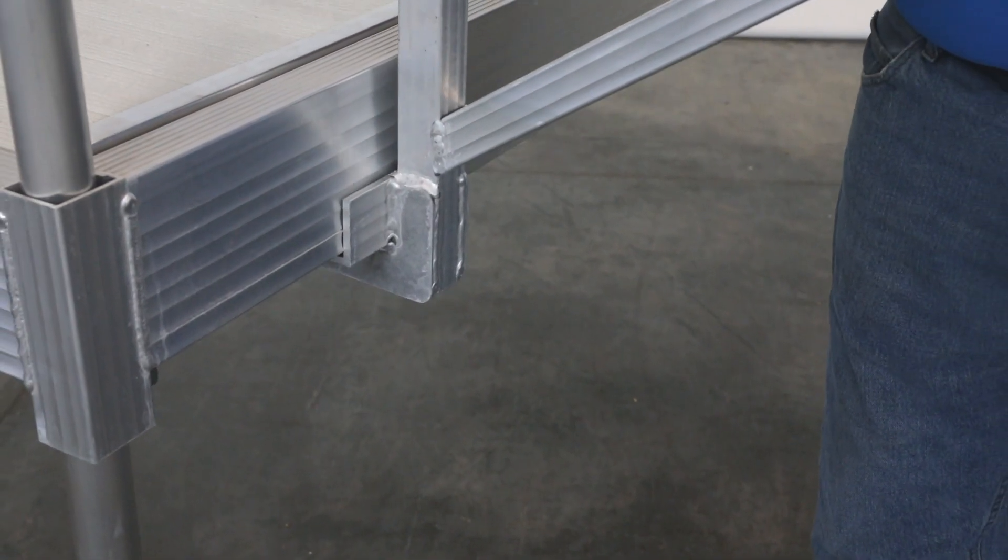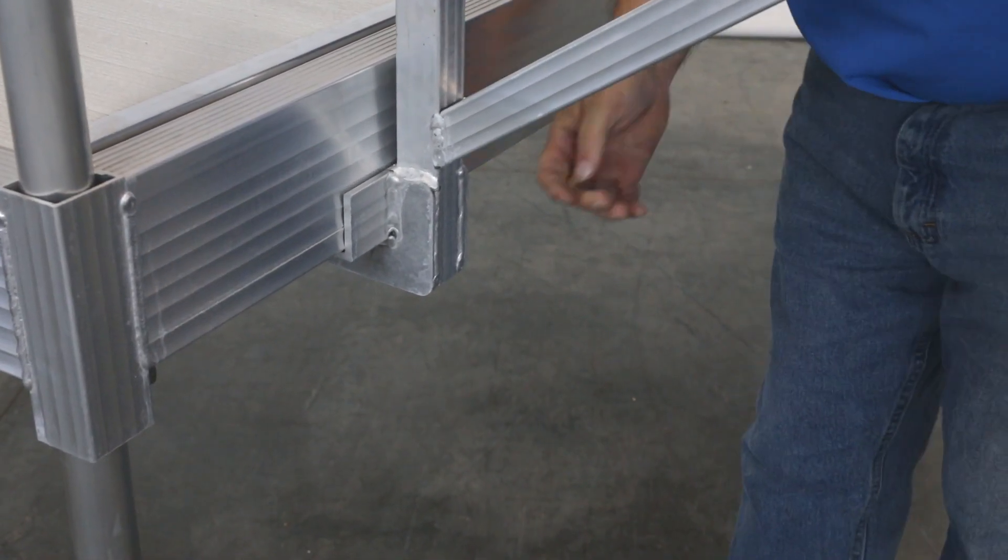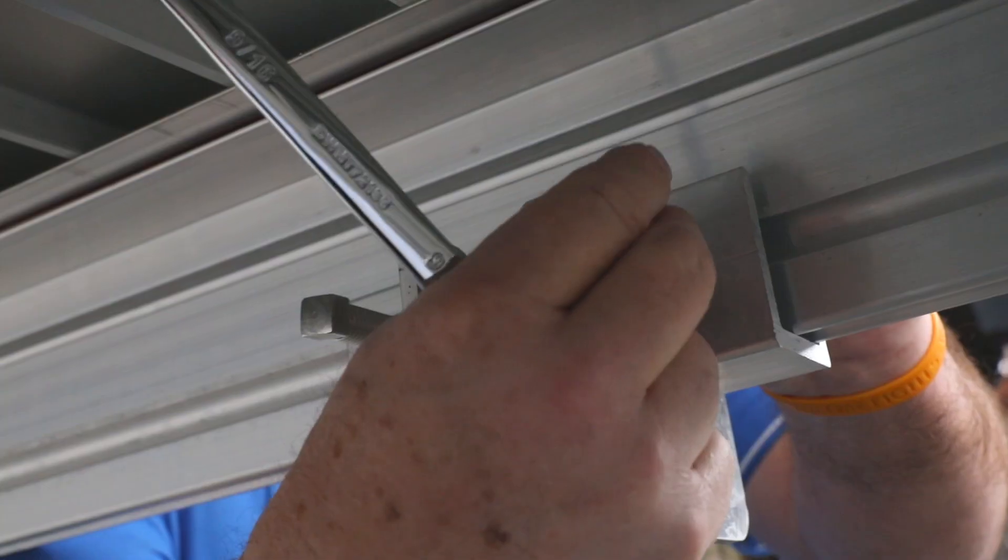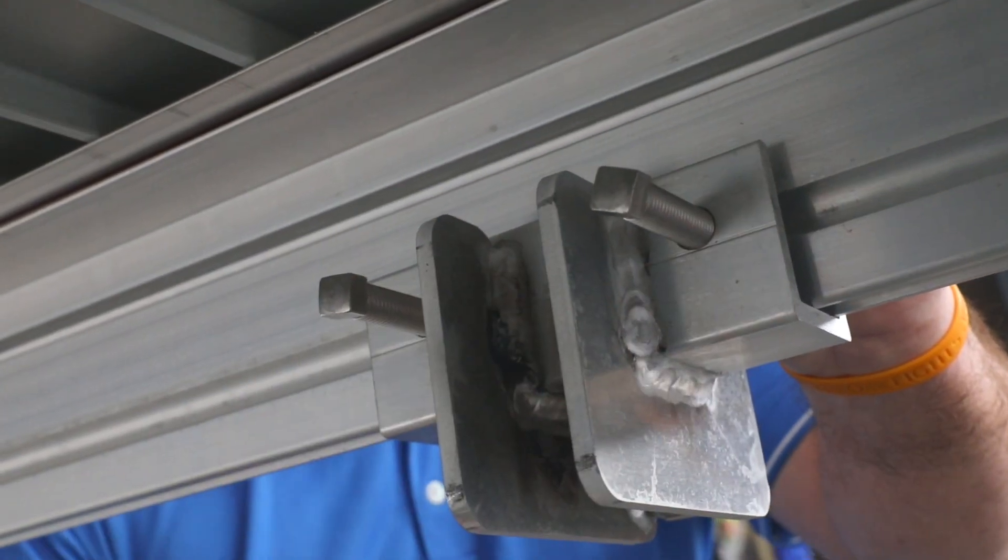With the bungees now mounted, slip the kayak rack into the desired location. This type of kayak rack can be mounted to many styles of dock. Now you're ready to secure your kayak rack to the dock.